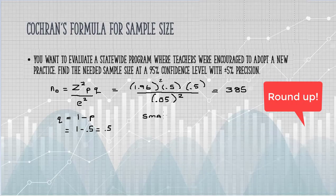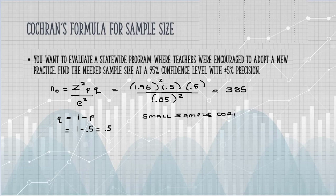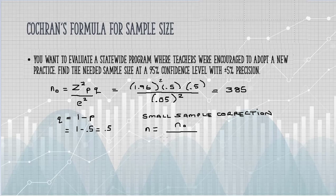If you have a small sample, there is a correction. You're going to take that sample size, which is 385 or n sub-zero, and you're going to plug it into this formula.